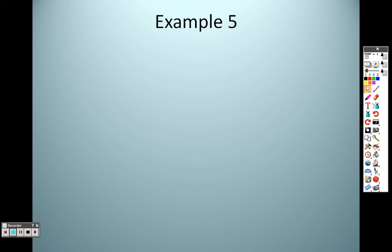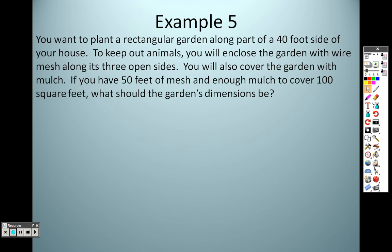Continuing 5.5, completing the squares, we're on example 5. What it says is you want to plant a rectangular garden along part of a 40-foot side of your house. To keep out animals, you will enclose the garden with wire mesh along its three open sides, and you will also cover the garden with mulch. If you have 50 feet of mesh and enough mulch to cover 100 square feet, what would the garden's dimensions be?